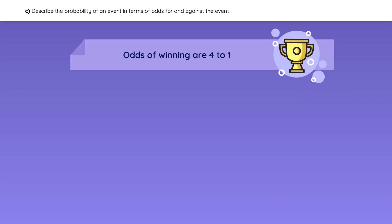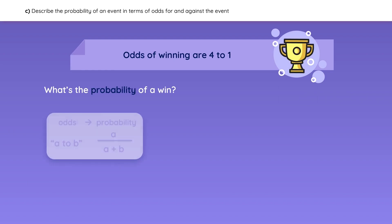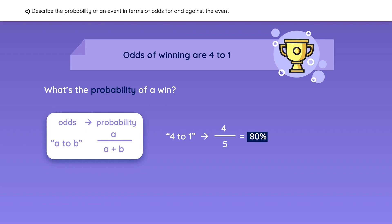This next learning outcome compares odds with probability. Let's say that the odds of your team winning are 4 to 1 — what is the probability of a win? Using the formula to convert odds to probability, the probability of winning is 80%. The probability of loss would be 1 minus the probability of winning, which equals 20%.